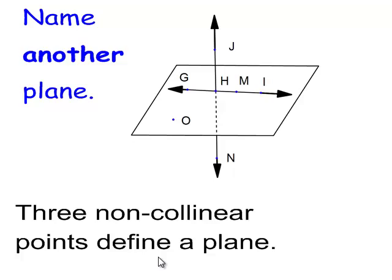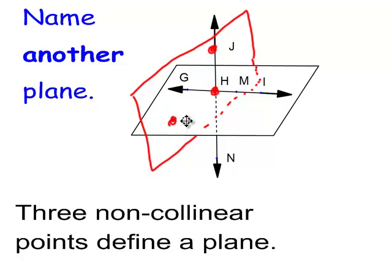Now, name another plane. Well, I named every way we could name what's shown. But we can draw a completely different plane and place it into here. And if I say that points J, H, and O are on that plane, there are three non-collinear points. That's a plane. So, there's plane J, H, O.